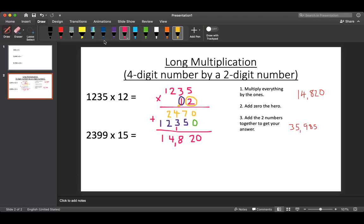Last one for me to model to you, 2,399 multiplied by 15. So let's just bring this up here so I've got a space. OK, 9 times 5 is 45. Oh, remember we're going to be multiplying everything by this 5.